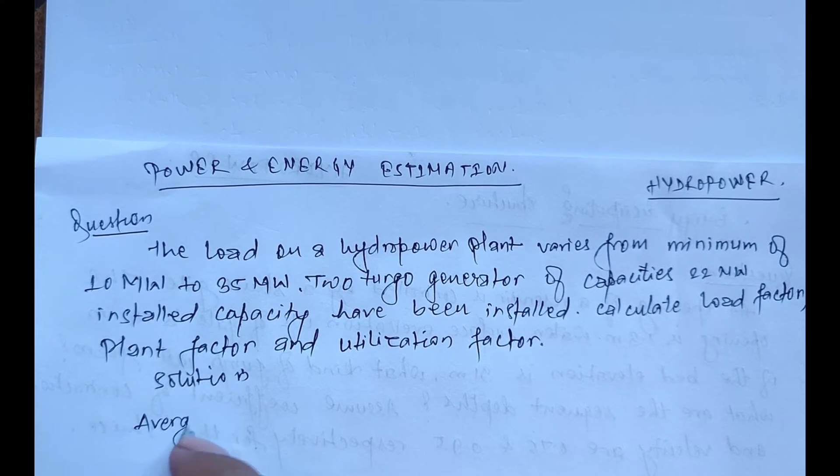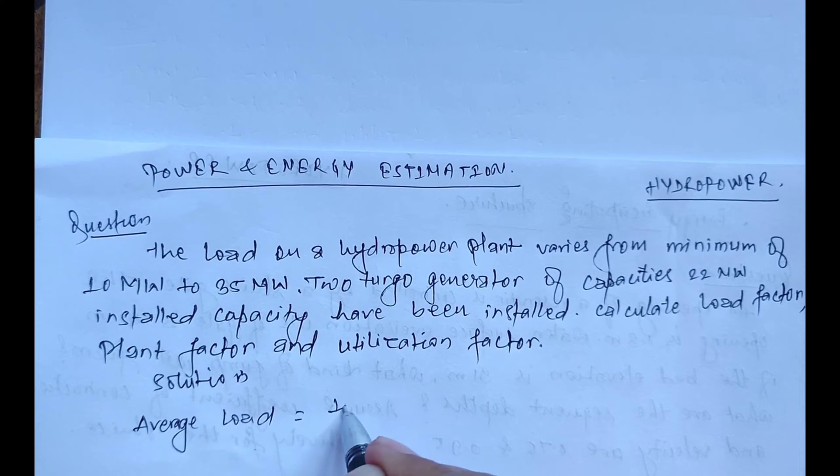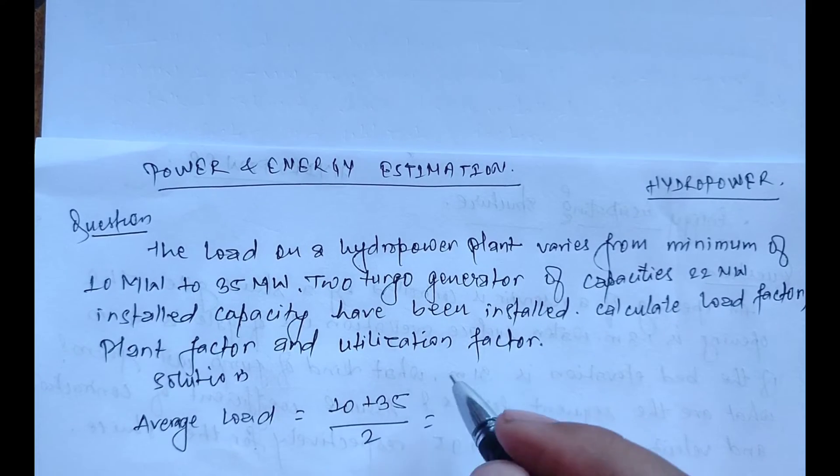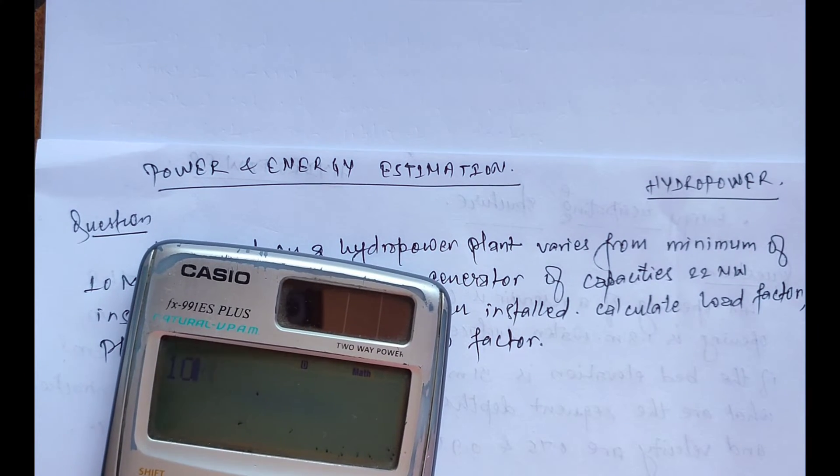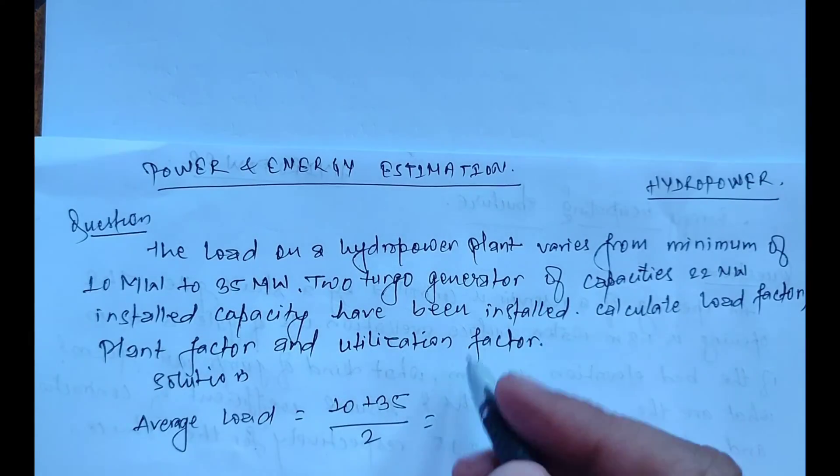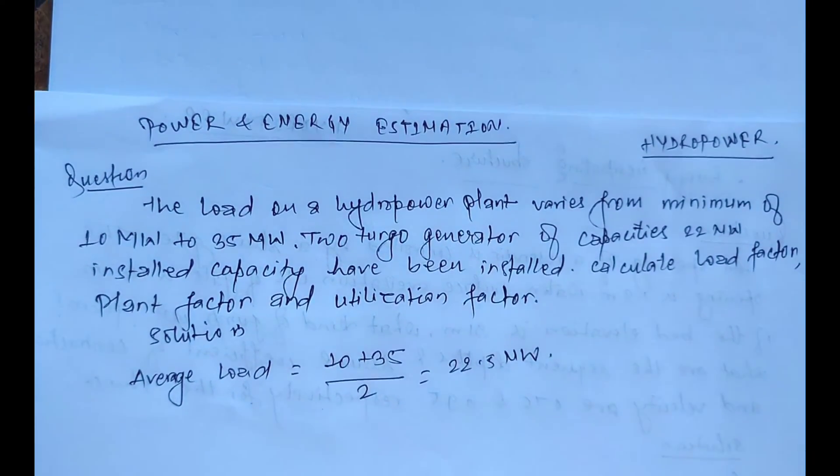Average load equals 10 plus 35 divided by 2, because first of all we will calculate the mean load. That is 10 plus 35 divided by 2, which means 22.5 megawatts. Now the total plant capacity is